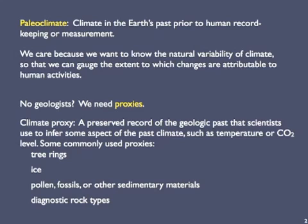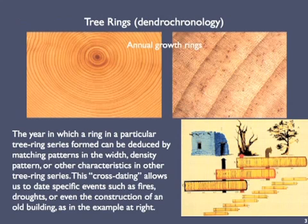Some commonly used proxies are tree rings, ice, pollen, fossils — in general pollen is a type of fossil — and diagnostic rock types. Annual growth rings in trees are familiar to almost everyone. Generally, trees respond to changes in climate by growing faster or slower, usually expressed as thicker or thinner tree rings.